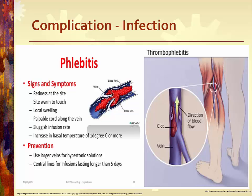Thrombophlebitis is the presence of a blood clot and vein inflammation. Treatment is the same as for infiltration and phlebitis. Symptoms are pain along the length of the vein, and the vein becomes increasingly painful and hard. Watch for septicemia and acute bacterial endocarditis. Discontinue the IV and notify the physician at the first sign of pain, edema, or redness. Elevate the extremity. If noticed within 30 minutes of onset, apply ice to the site to decrease inflammation. If noted after 30 minutes, apply warm compresses to encourage absorption. Document the findings and actions, then restart the IV in an alternative location — the opposite extremity if possible.